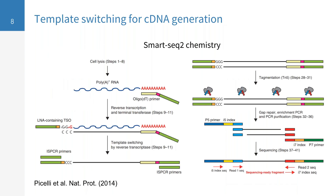I'll quickly walk through one example chemistry that generates full-length cDNA, enabling us to get gene expression and antibody sequence from the sequencing data. The first step is cell lysis, where the cellular mRNA is reverse transcribed by an oligo dT primer. Importantly, this primer has a nucleotide handle called an ISPCR sequence on the end. During the reverse transcription step, a couple of C's get added to the 5-prime end of the cDNA molecule, which hybridize to G's in the template switch oligo, or TSO.